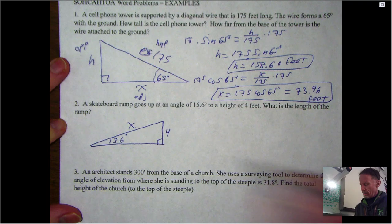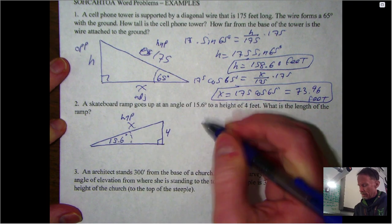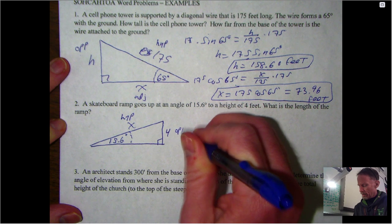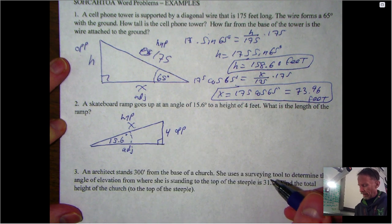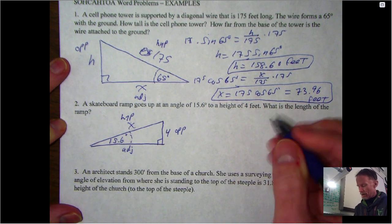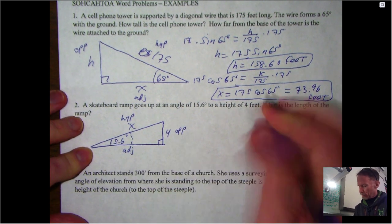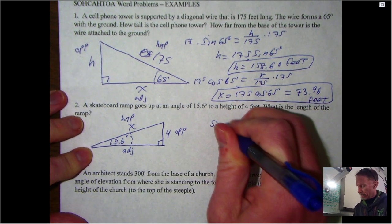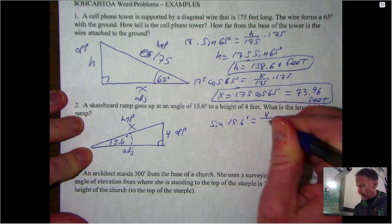In this case when I'm looking for the length of the ramp, I'm trying to find - I'll call that x. And again label everything: that's hypotenuse, that's the opposite, and that's the adjacent. In this case opposite hypotenuse again, so it's going to be sine.